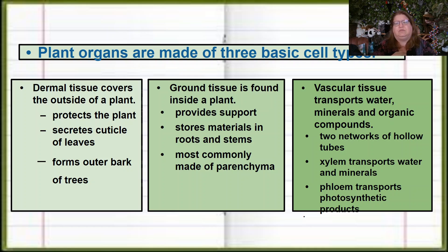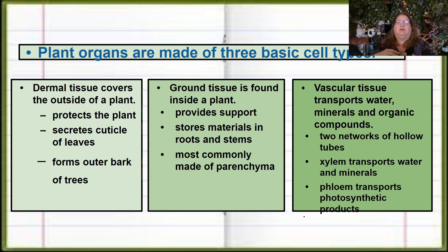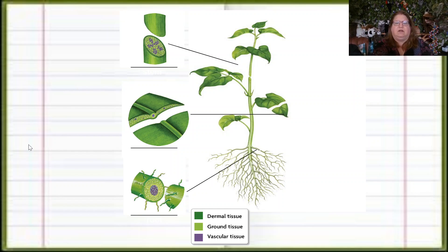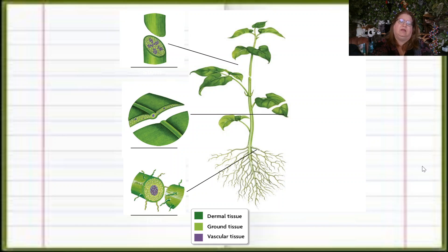The third tissue type is vascular tissue, and that's what we're going to focus on. Vascular tissue transports water, minerals, and organic compounds. Xylem transports water and minerals; phloem transports sugars throughout the plant. In this diagram they've color coded them — the dark green on the outside is the dermal tissue, the lighter green making up the majority of the plant is ground tissue, and the vascular tissue is mainly in the center or in rings, carrying and transporting material.